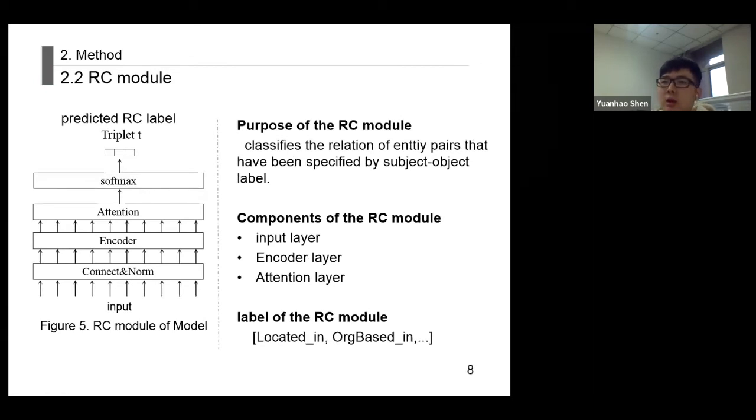The RC module consists of an encoder structure for learning the information of input and an attention layer for getting relation vector. The RC task is a multi-classification task and its label depends on the dataset.